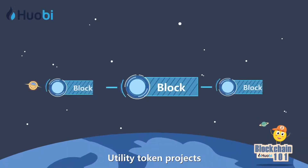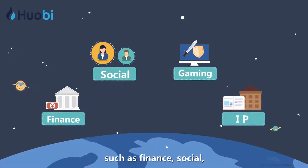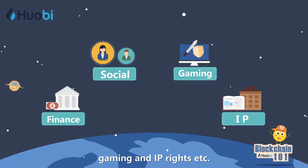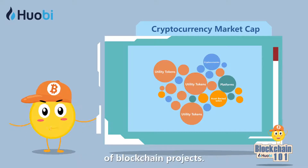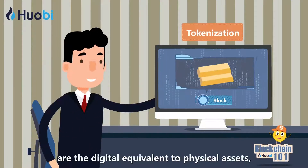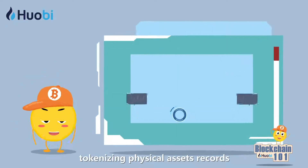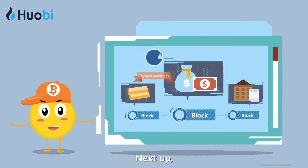Utility token projects encompass a wide range of fields such as finance, social, gaming, and IP rights. It is also the fastest growing area of blockchain projects. Asset tokens are the digital equivalent to physical assets, tokenizing physical asset records onto the blockchain.